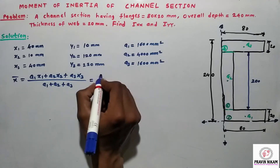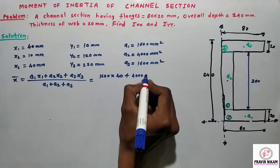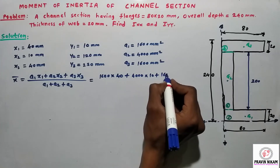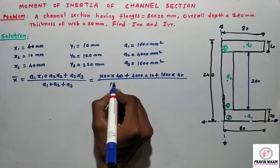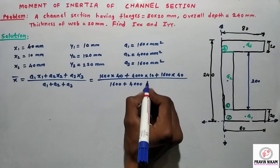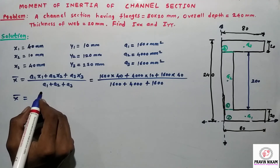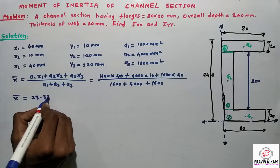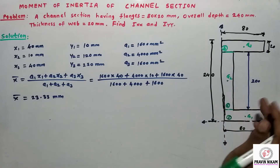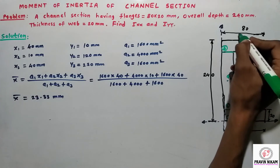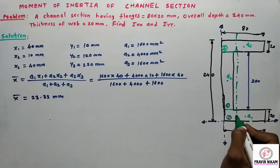Now compute X-bar. X-bar equals (A1·x1 + A2·x2 + A3·x3) divided by (A1 + A2 + A3), which equals 1600 plus 4000 plus 1600 in the denominator. So X-bar becomes 23.33 mm. This is the vertical centroidal axis at distance X-bar, that is the YY axis.